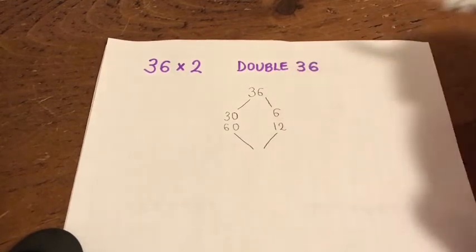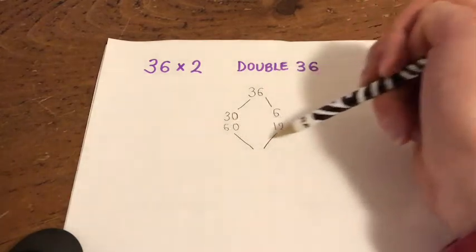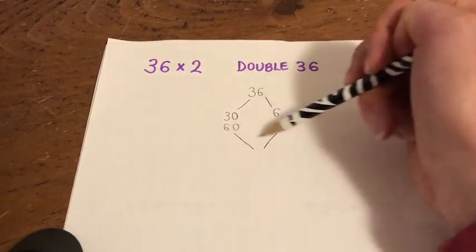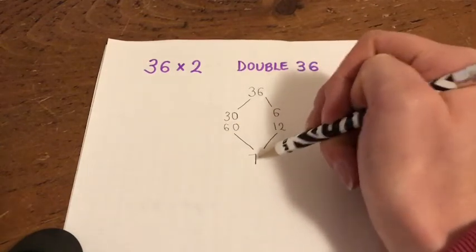So now we've done that, we can pop it back together. And now you can see how this diamond method gets its name. I now need to recombine the two numbers, the two answers that I've got here. So 60 and 12 is 72, and the answer to 36 times 2, or double 36, is 72.